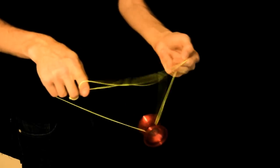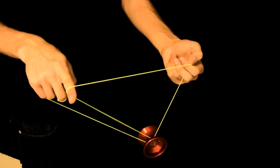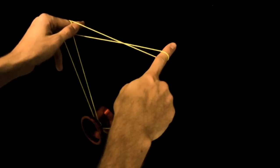Using your non-throw hand thumb, pinch the string with your index finger and curl towards you, letting the forward string fall.